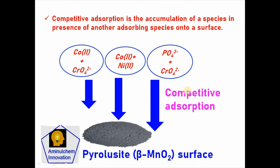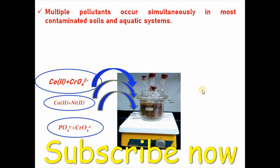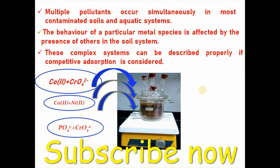These are competitive adsorption because adsorption of one species occurs in presence of another species onto this surface. Multiple pollutants occur simultaneously in most contaminated soils and aquatic systems, and the behavior of a particular metal ion is affected by the presence of others in the soil system. This complex system can be described properly if competitive adsorption is considered.